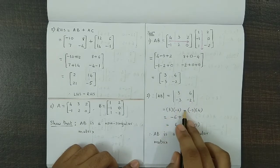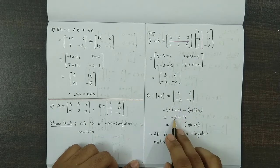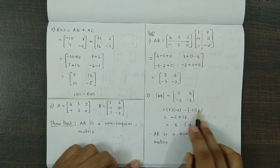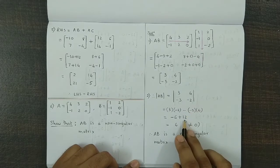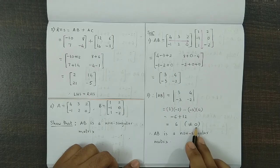Now we solve this determinant, so 3 times minus 2 minus minus 3 times 4. So this becomes minus 6, and this product is minus 12, but again minus of minus 12 is plus 12. So 12 minus 6 is equal to 6, which is not equal to 0.